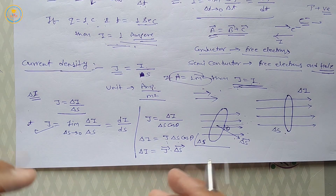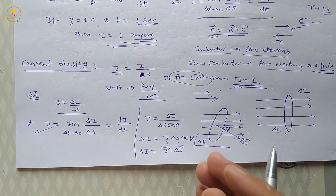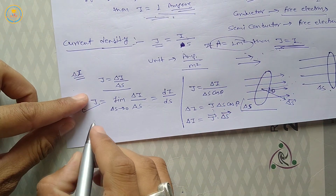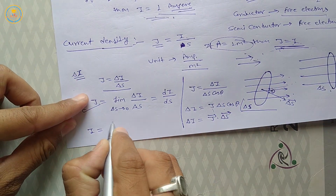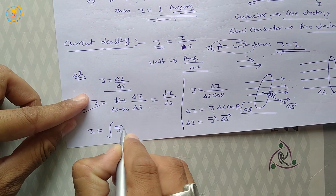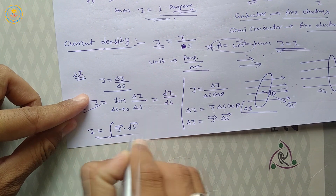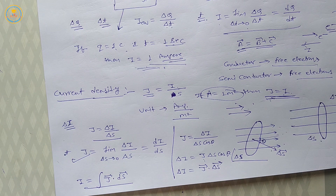If the area is finite, then I equals the integration of J vector dot dS vector. This is the current density for a finite area.